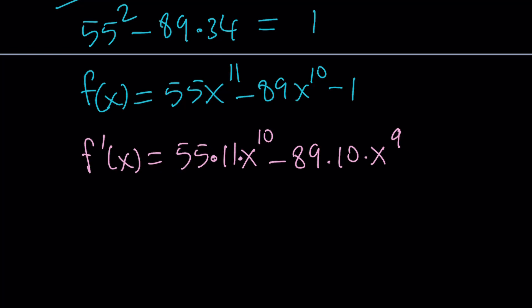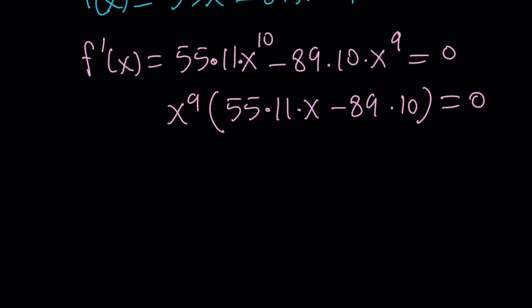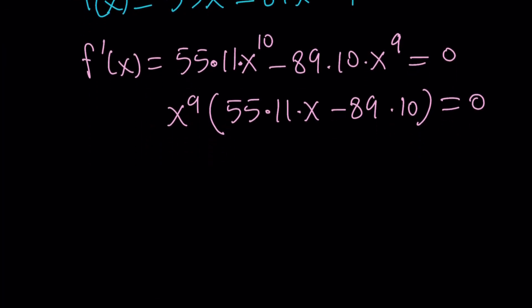And then if you set this equal to 0, you're going to be getting x to the power 9 on the outside. You can take that out. You're going to get 55 times 11 times x minus 89 times 10 equals 0. From here, you get two solutions. Isn't that interesting? We started off with an undesic, differentiated, and now we ended up with the derivative having two roots. One of them is x equals 0.